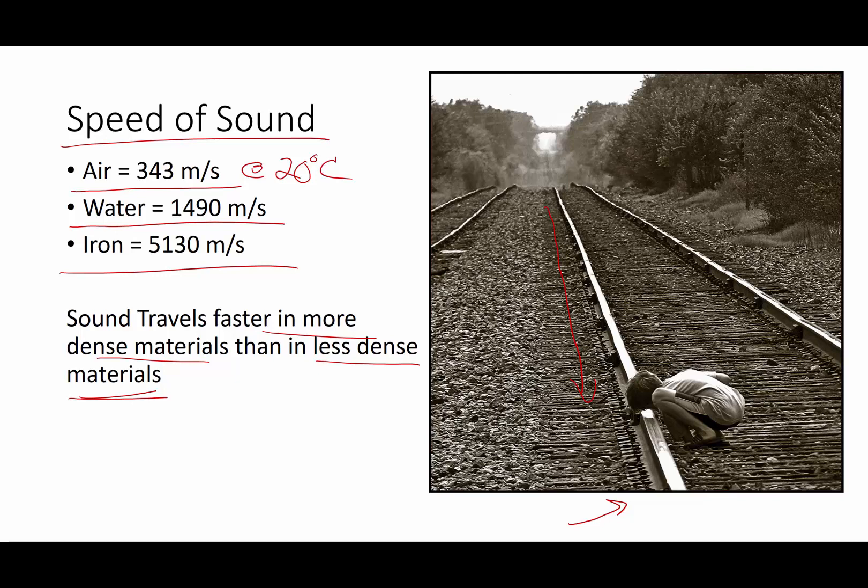If you put your ear to the ground, you can tell if the cattle are going to be stampeding because of the fact that if it's 5,000 meters per second versus 300 meters per second through a solid versus through air, it's going to be over 10 times faster. You're going to hear the sound a lot sooner, and you're going to get a chance to get out of the way, or if you're a bad guy robbing the stage, you can get out of the way as well.